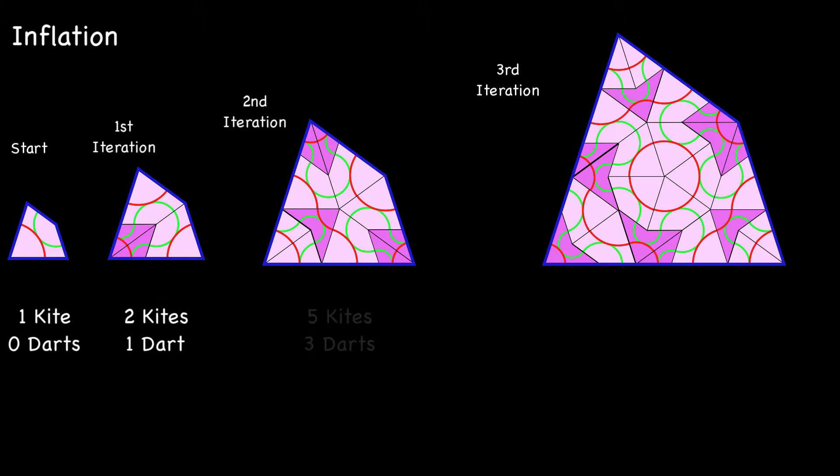Second iteration, if we count them, five kites, three darts. And moving on, third iteration, we get 13 kites and eight darts. And you might recognize the sequence of numbers as the Fibonacci sequence, the Fibonacci numbers.